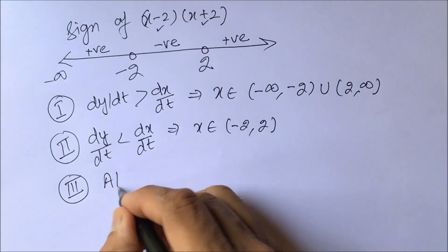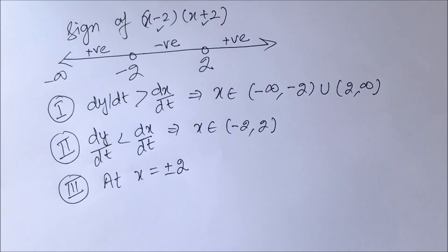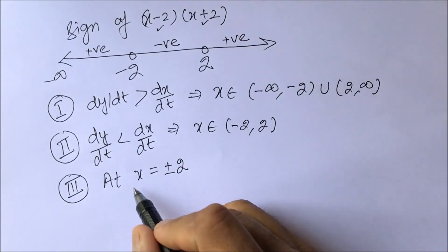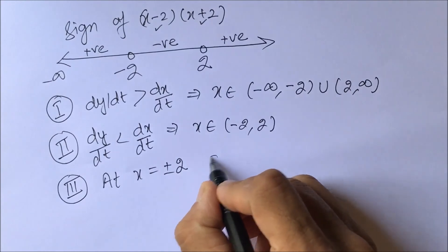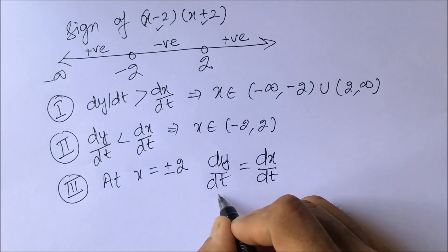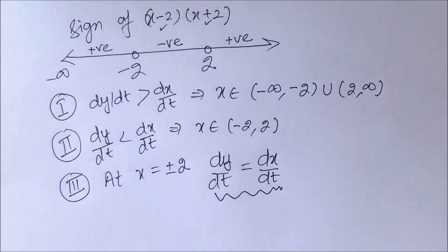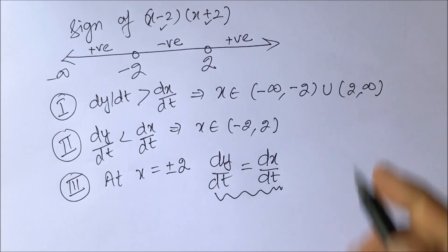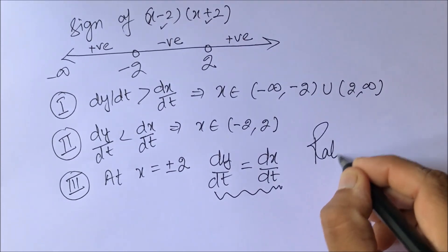Thirdly, what is happening at x equals plus minus 2? At x equals plus minus 2, though both the coordinates are changing, relatively they will not change. So at x equals plus minus 2, dy/dt is equal to dx/dt. They are changing but they are equal in their change, so for them relatively they will not change. This is a very interesting question to know the concept of rate of change.